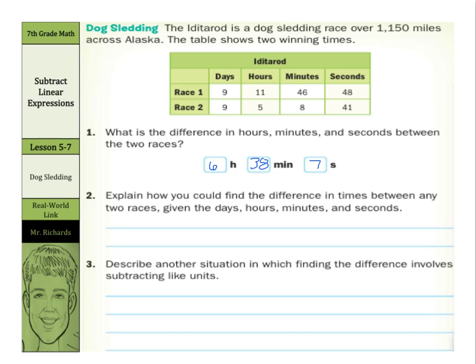Well, what we really did here is we subtracted like units. We subtracted the seconds from the seconds, the minutes from the minutes, the hours from the hours, and the days from the days. 9 minus 9 was 0, so we had 0 for days. And the key here is we kept the labels of hours, minutes, and seconds.